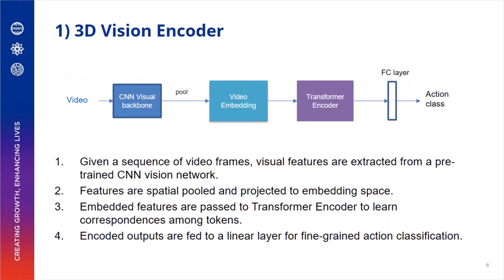The architecture of our 3D Vision Encoder is shown here. Given a sequence of video frames, we extract visual features from a backbone CNN network. The features are spatially pooled and projected to an embedding space. The embedded features are then passed to a Transformer Encoder to learn correspondences among tokens. Finally, the encoded outputs are fed to a linear layer for fine-grained action recognition.